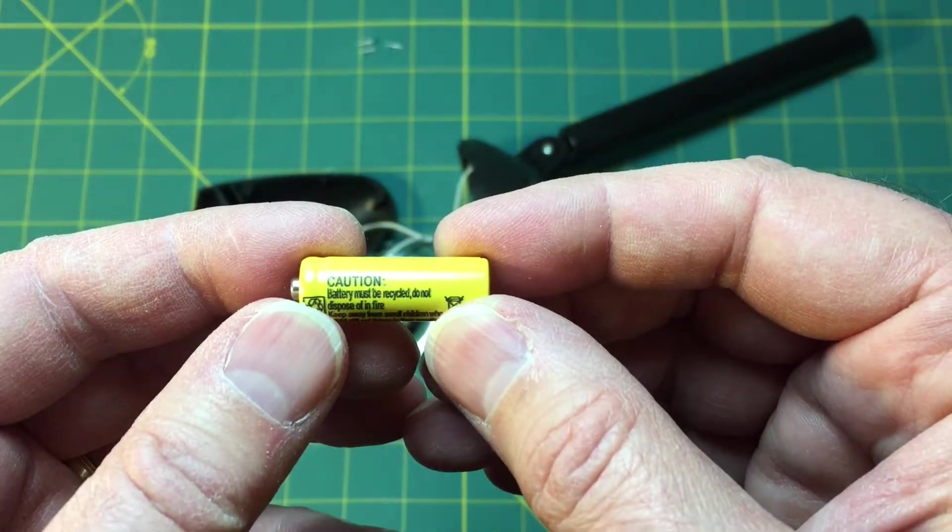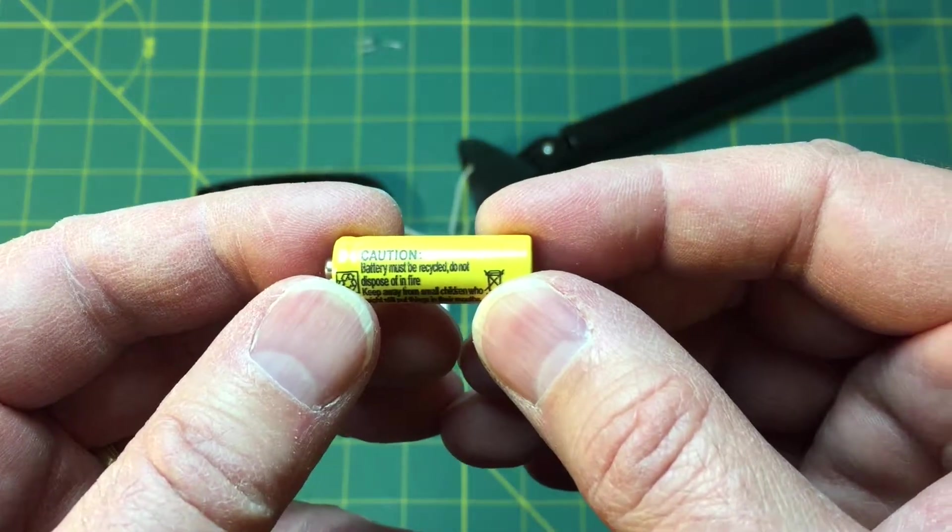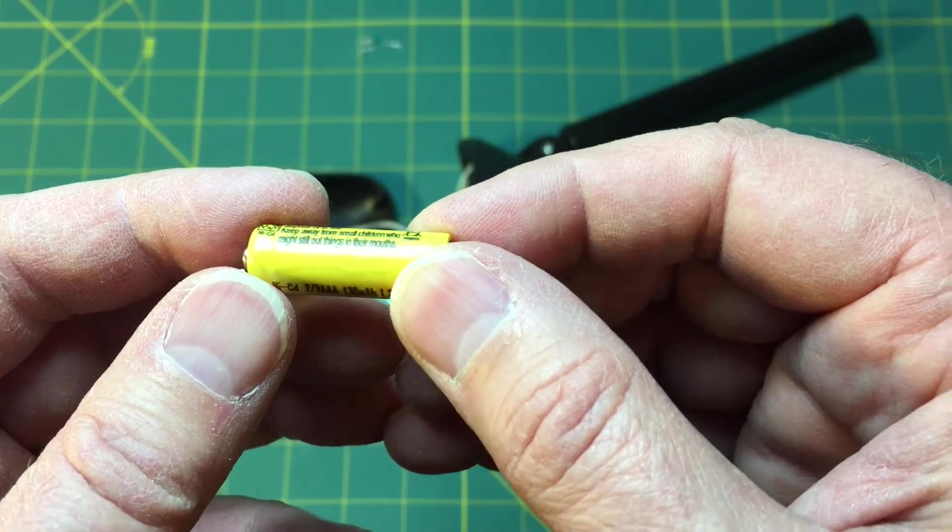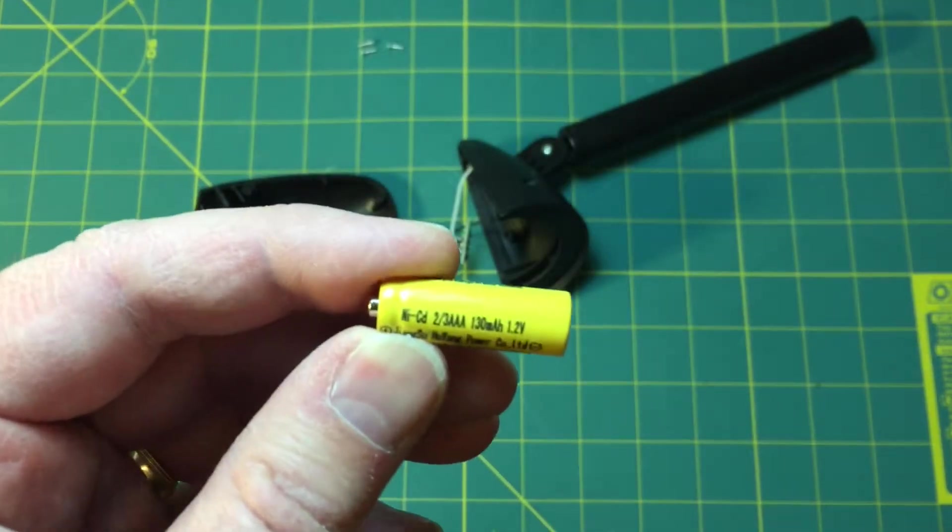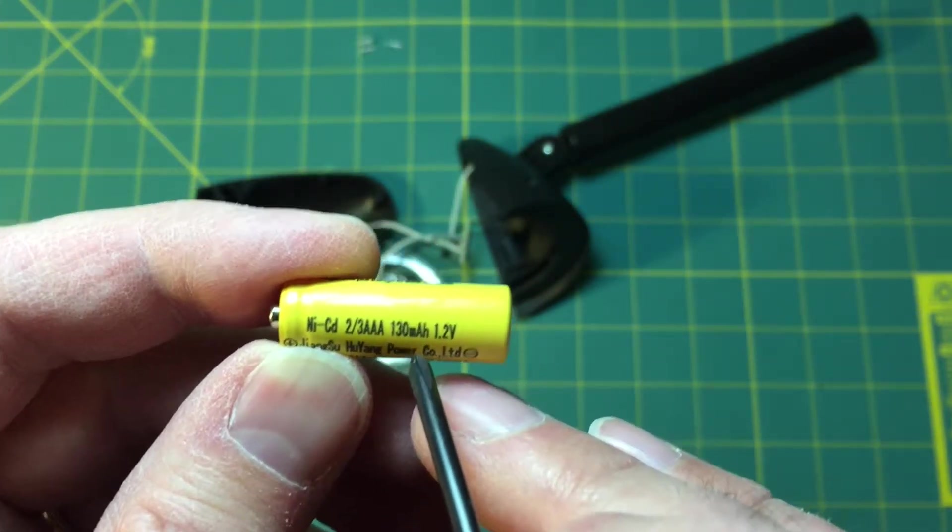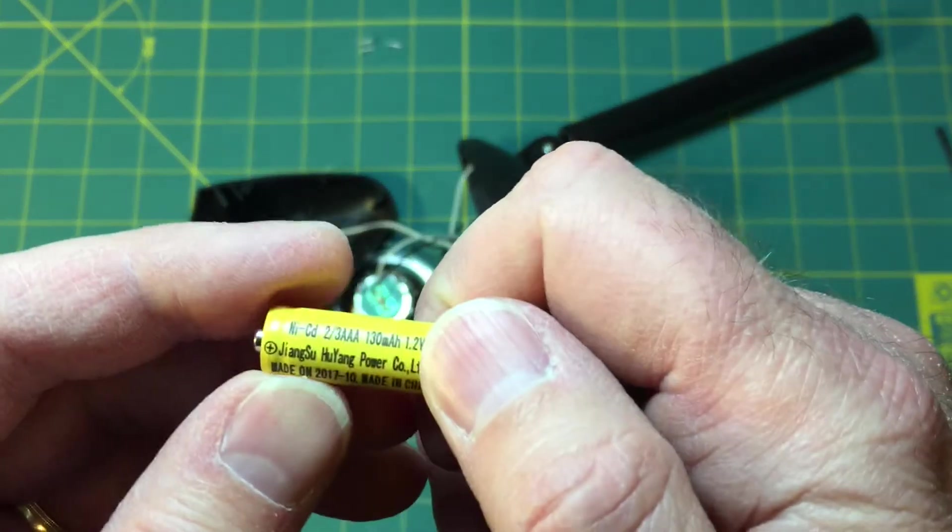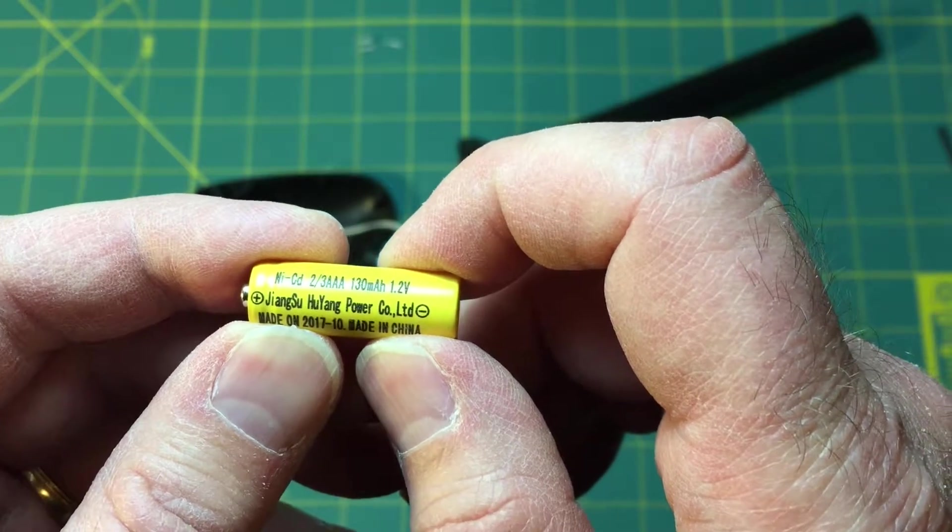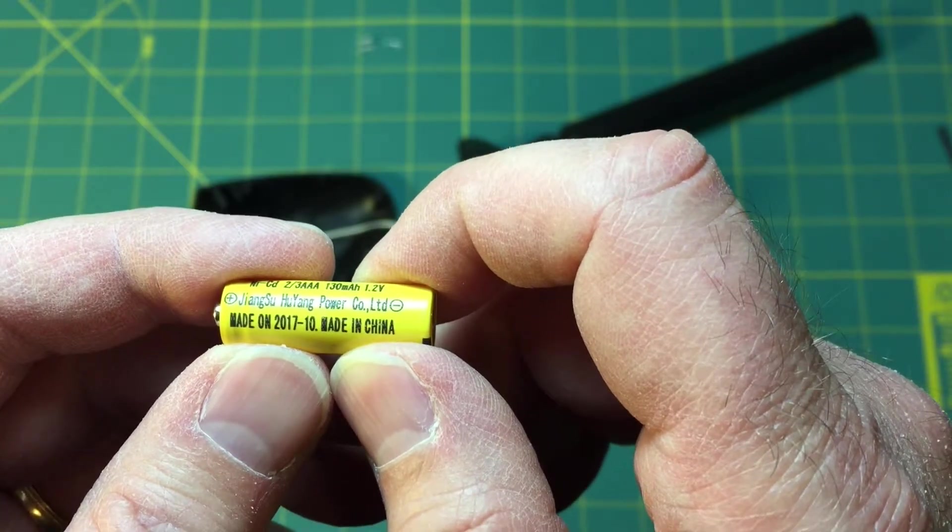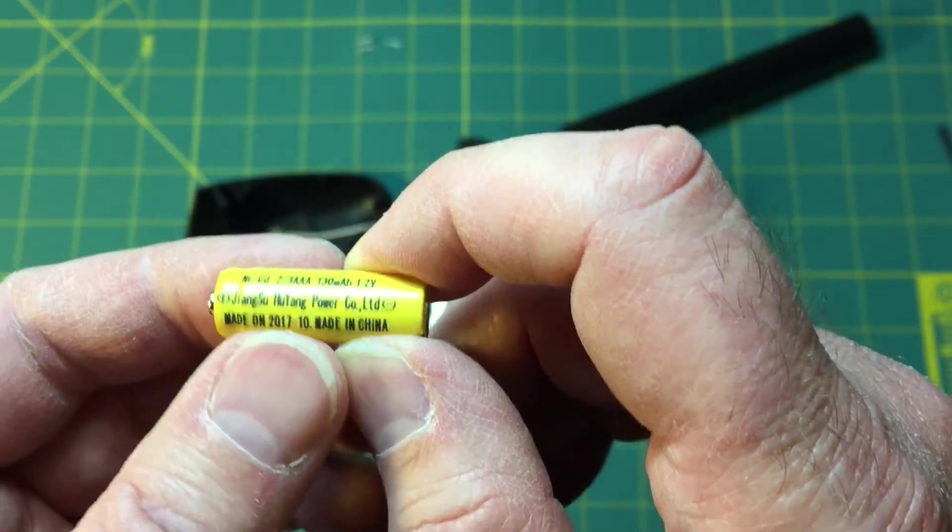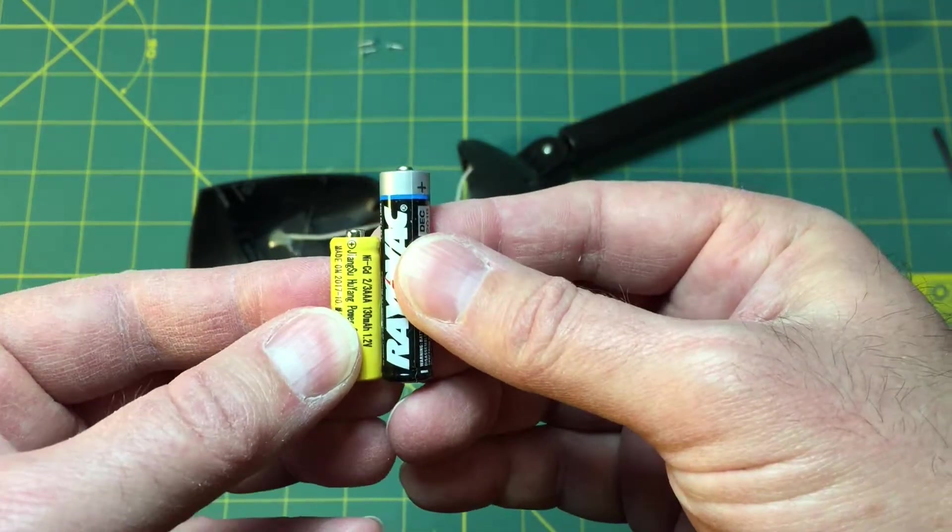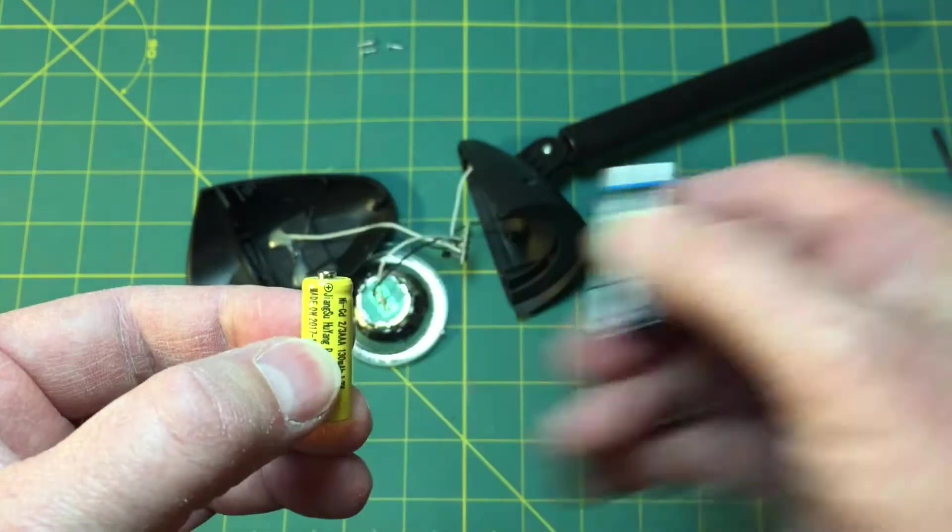I popped the battery out and it says battery must be recycled, do not dispose in fire, keep away from children. This is not a nickel metal hydride but a nickel cadmium and it says two-thirds triple A, 130 milliamp hours, 1.2 volts, made in China, made in October 2017. So I have a full triple A here to compare and yeah I guess that is two-thirds of a triple A, learn something new every day.